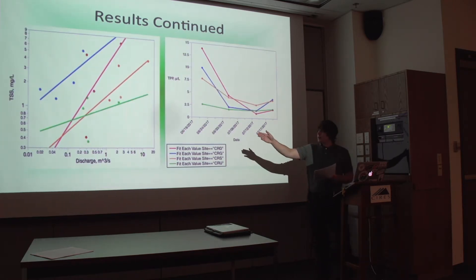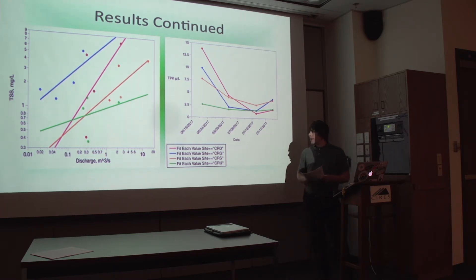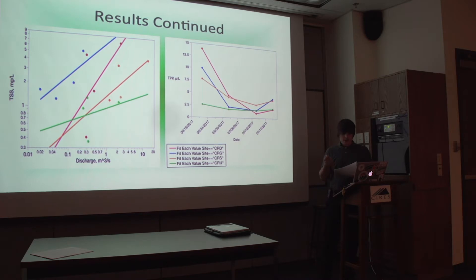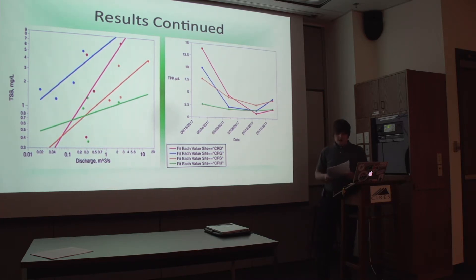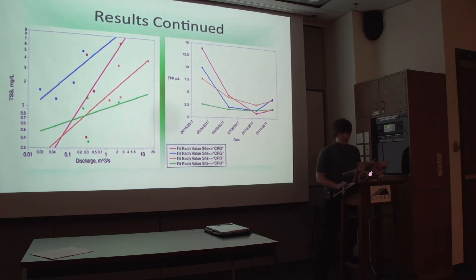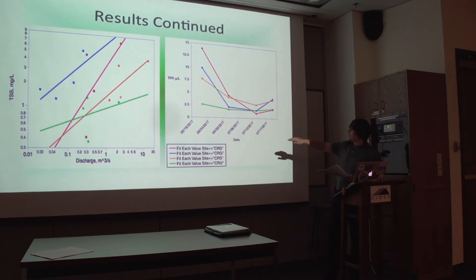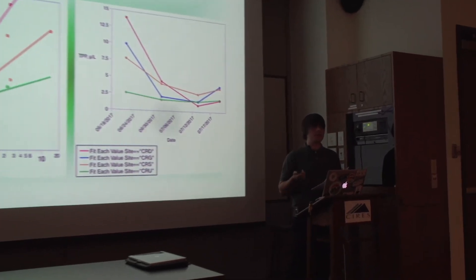Looking at the graph on the left, with total suspended solids in milligrams per liter on the log-transformed y-axis and discharge in meters cubed per second on the log-transformed x-axis, over this period for each individual site, as discharge increases, particle concentrations increase as well. For a given discharge value, Crater Gulch shows a higher particle concentration in comparison with the other sites. On the right, total particulate phosphorus in micrograms per liter on the y-axis versus date shows that changes in particulate phosphorus over time are very similar to the changes seen in total suspended solids.